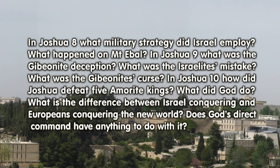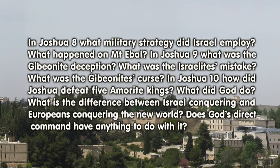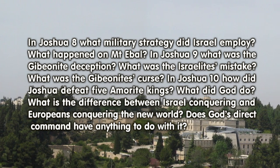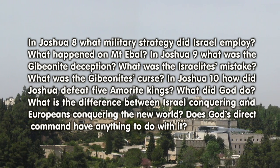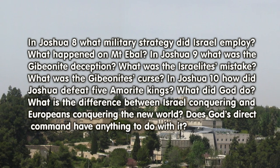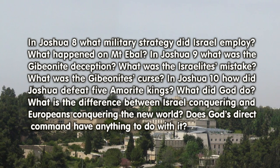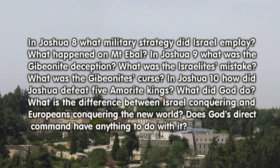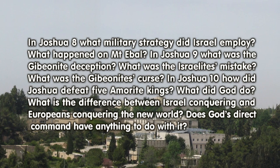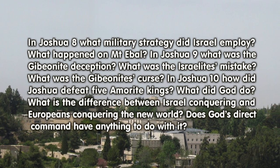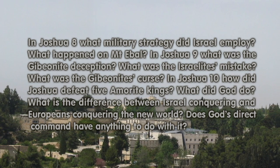In Joshua 10: How did Joshua defeat five Amorite kings? What did God do? What's the difference between Israel conquering and Europeans conquering the New World? Does God's direct command have anything to do with it?